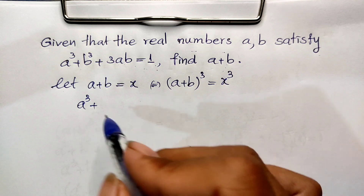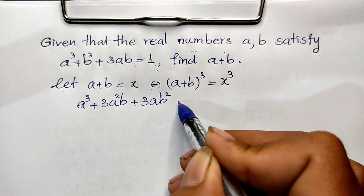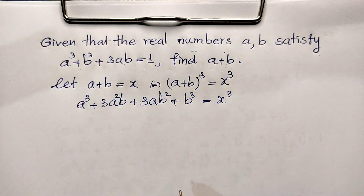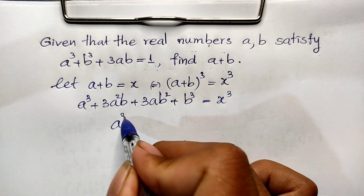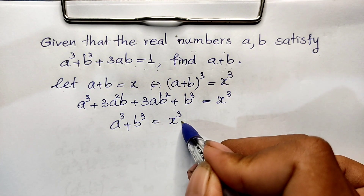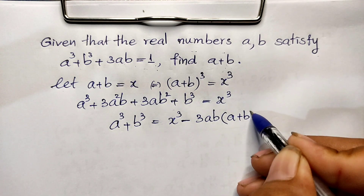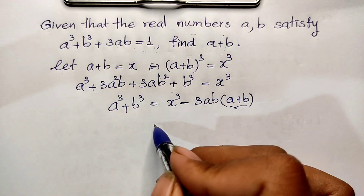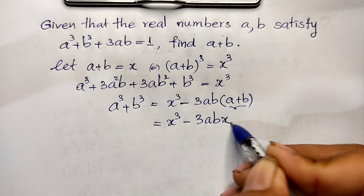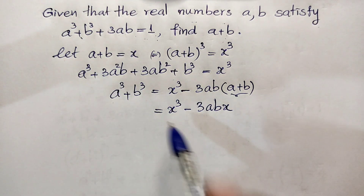Expanding (a + b)³ gives a³ + 3a²b + 3ab² + b³ = x³. Rearranging, a³ + b³ = x³ - 3a²b - 3ab², which equals x³ - 3ab(a + b). Since a + b = x, I replace (a + b) with x, giving a³ + b³ = x³ - 3abx.